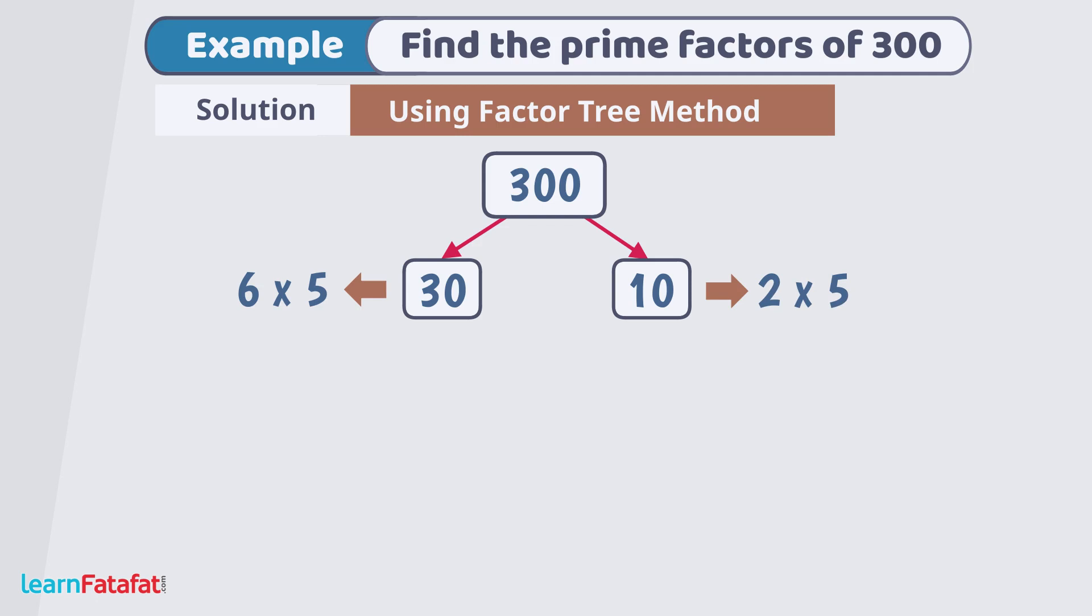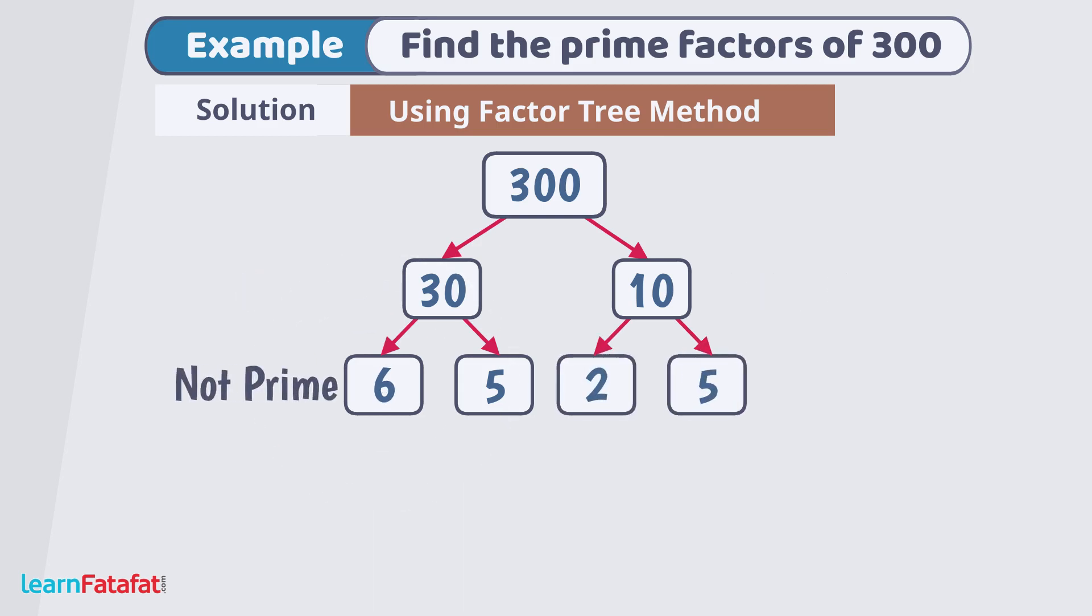So, let's extend 2 branches from 30 and write 6 and 5. Also, let's extend the branches from 10 and write 2 and 5. 6 is not prime. So, let's make 2 more branches from 6 that is 2 and 3.